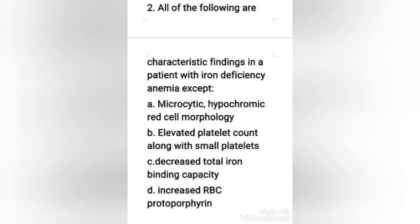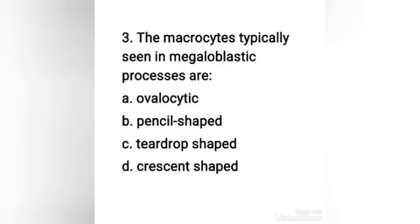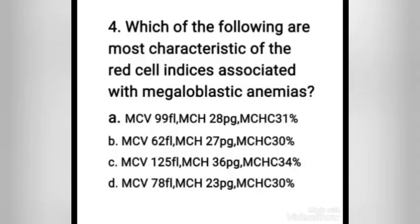Next question: the macrocytes typically seen in megaloblastic processes are — ovalocytic, pencil-shaped, teardrop-shaped, or crescent-shaped? The right answer is option A, ovalocytic. The macrocytes typically seen in megaloblastic anemia are ovalocytic. In true megaloblastic conditions, macrocytes are oval, as opposed to the round macrocytes usually seen in alcoholism and obstructive liver diseases.